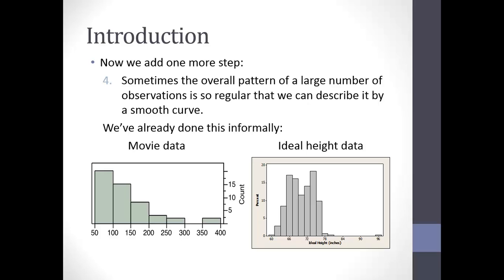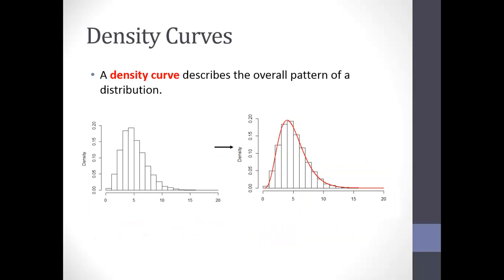Pulling up two histograms from the chapter one and two notes — we've already sort of done this. I encourage you to always draw a smooth curve when describing a distribution so you can see the overall pattern. For the height data we had a bimodal shape. Now we're going to talk about doing that a little more formally. If my histogram looks something like I have there on the left, I can draw a smooth curve to it on the right — that's called a density curve. The density curve simply describes the overall pattern of the distribution.